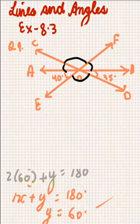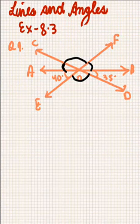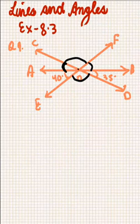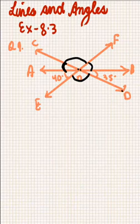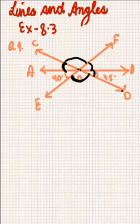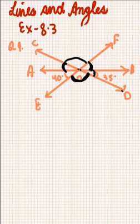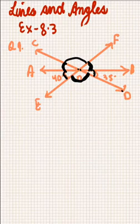In Question 9, we are given a figure and have to find the measures of angle AOC, angle COF, angle DOE, and angle DOF. We can see that 40 degrees and angle DOF are vertically opposite angles because line EOF and CD intersect at point O.